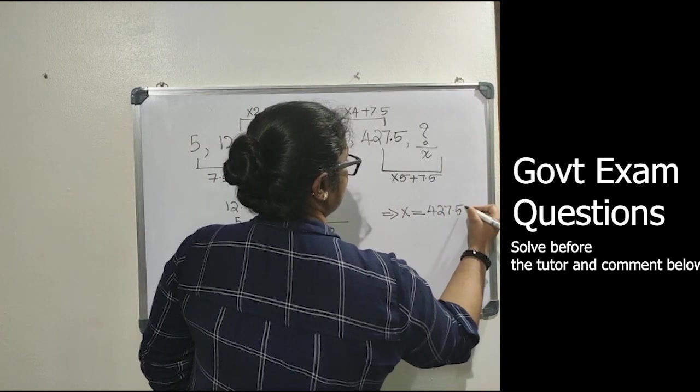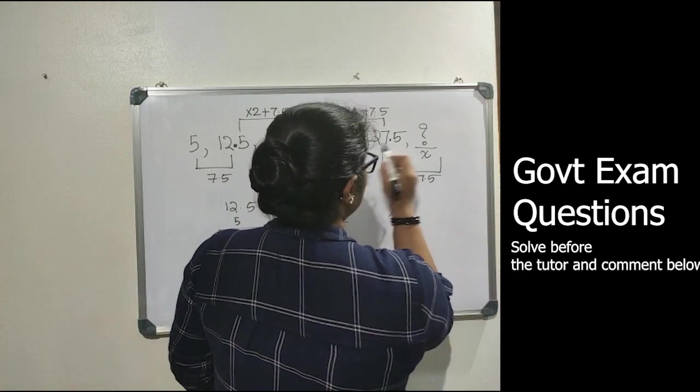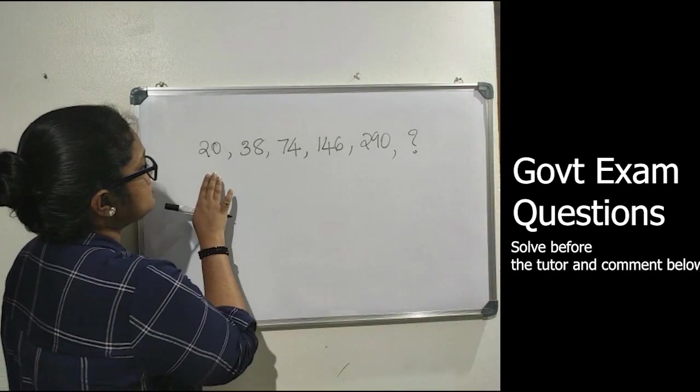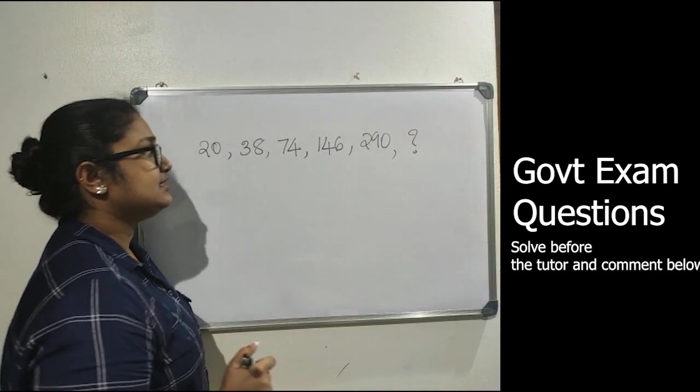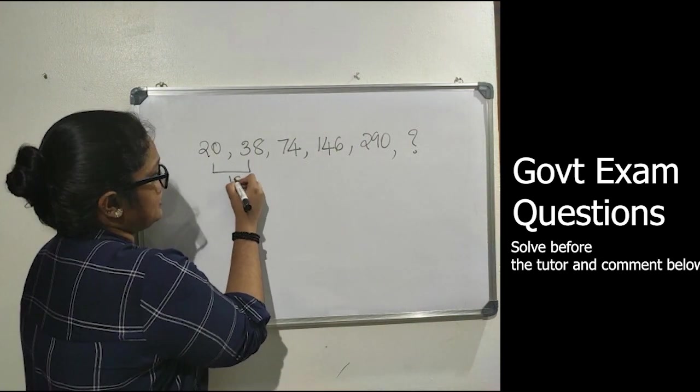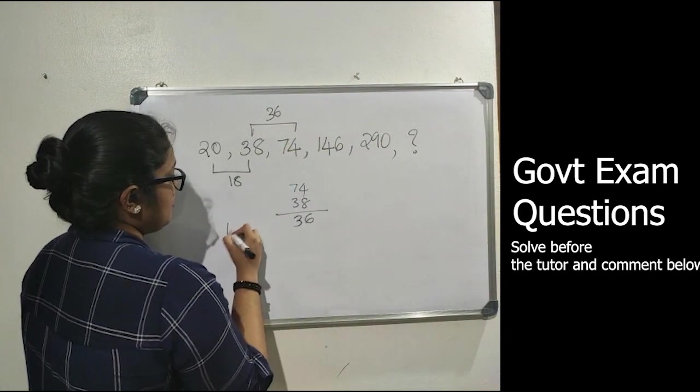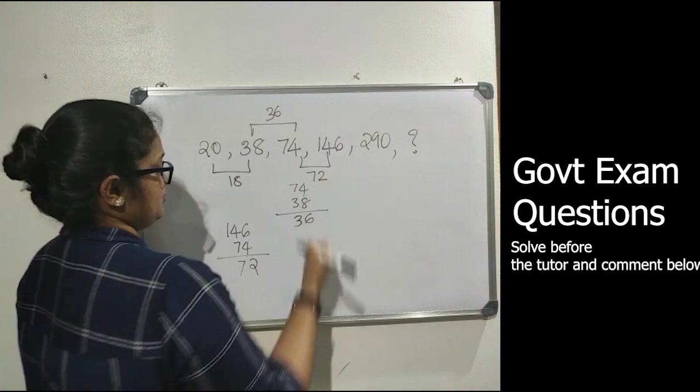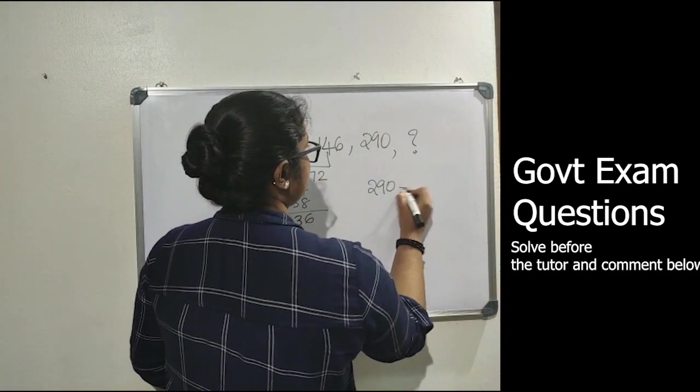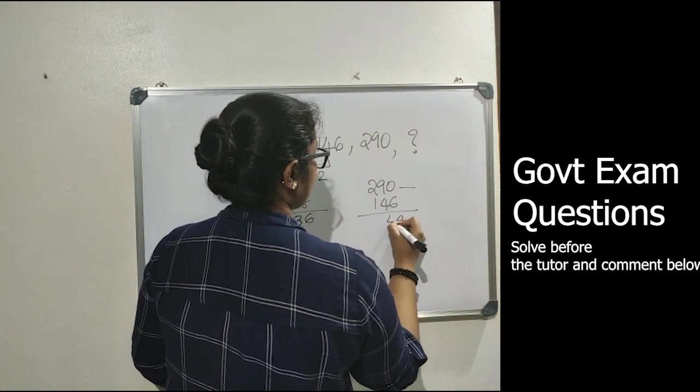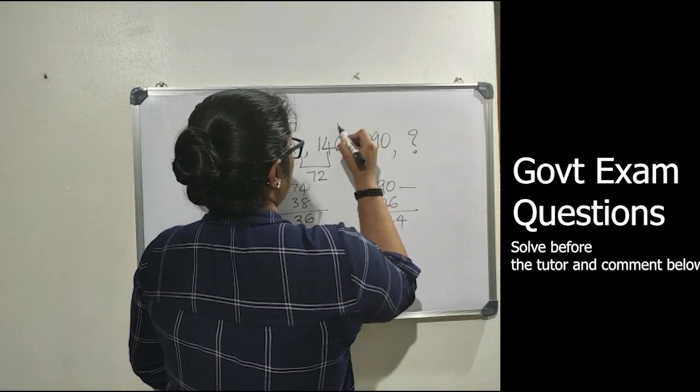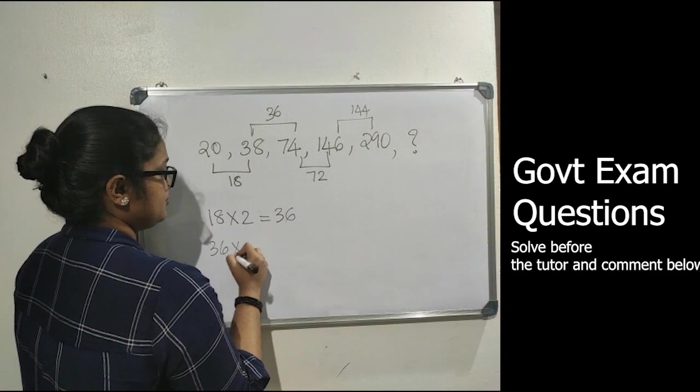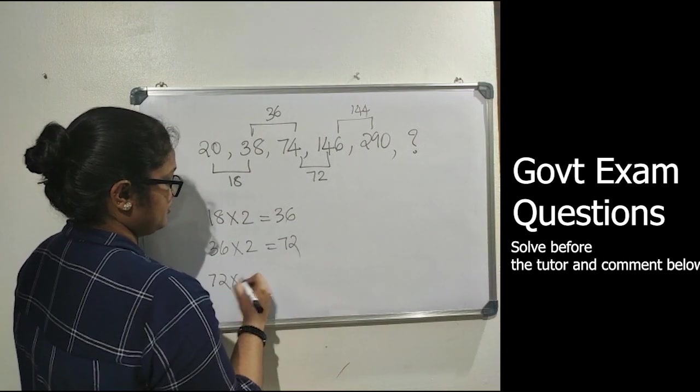Next question is 20, 38, 74, 146, 290, and the last number is unknown. The difference between 20 and 38 is 18, then 36, then 146 minus 74 equals 72.